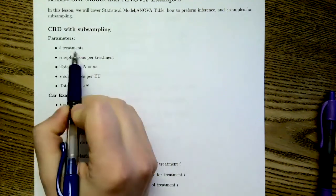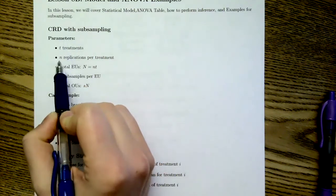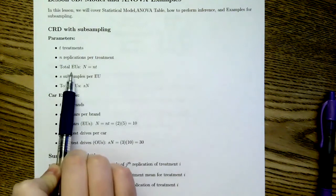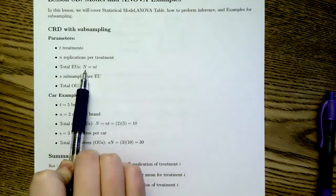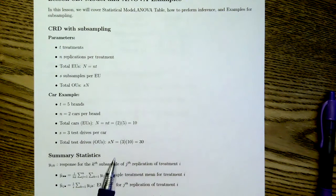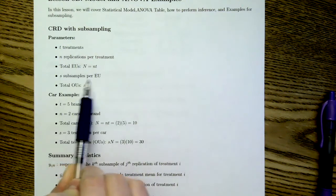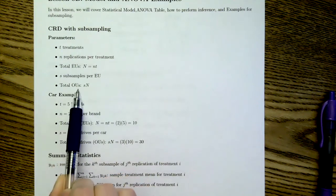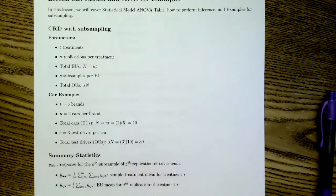Our parameters are little t for treatment, the same as we've seen with the CRD. Little n for number of replicates per treatment. So this tells us our total number of EUs is capital N equal to little nt. What's new here is this little s, which represents the subsamples per EU. So the total number of observational units is little s times big N. Previously, we only had one observational unit per EU, but now we have observational units which are multiples of our experimental unit. We're going to be focused on the balanced design case.